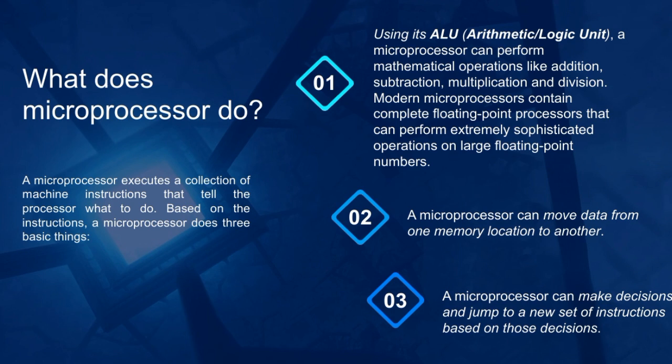Number two, a microprocessor can move data from one memory location to another. And number three, a microprocessor can make decisions and jump to a new set of instructions based on those decisions.